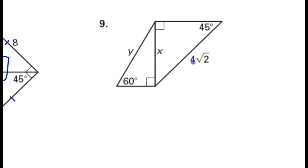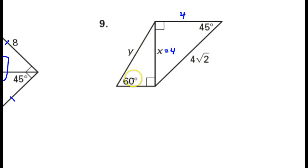The hypotenuse is 4 radical 2, which means the two legs should simply be 4. So this should be 4 and this should be 4. 4, 4, 4 radical 2 — that's the pattern. Now we need to jump over to this other triangle, which is a 30-60-90 triangle, and this one is going to be a little bit more tricky.